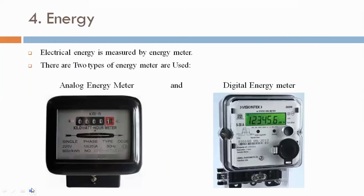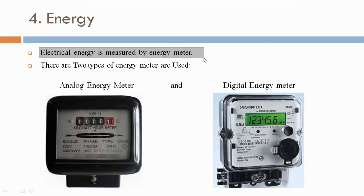Now we are discussing energy. Electrical energy is measured by an energy meter. Energy is defined as power multiplied by time — power in watts or kilowatts multiplied by time gives us energy.